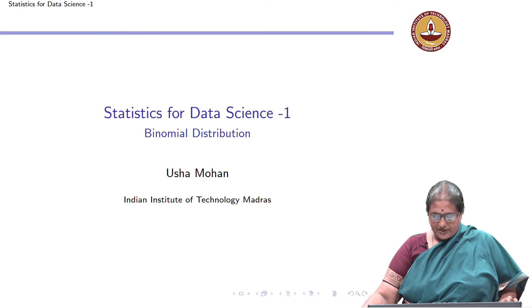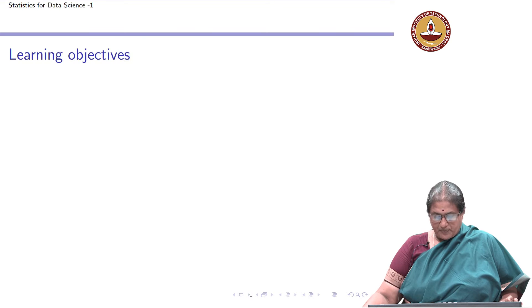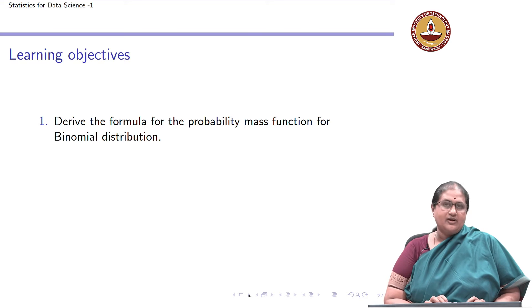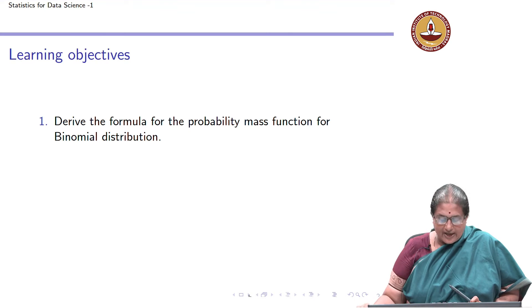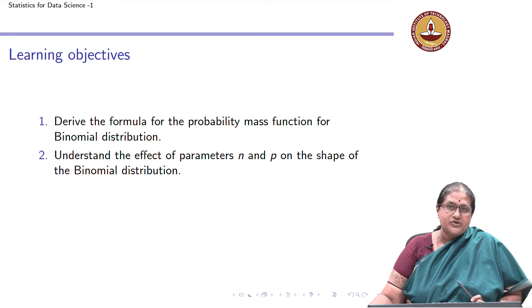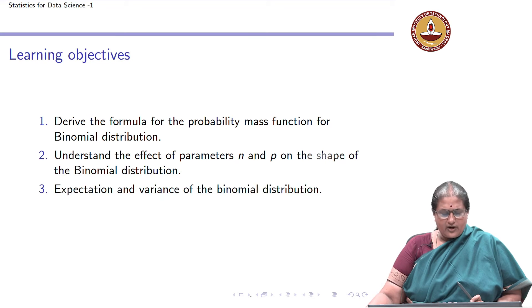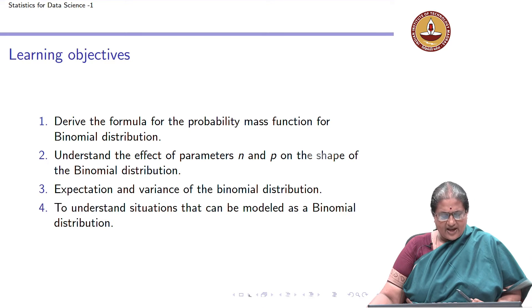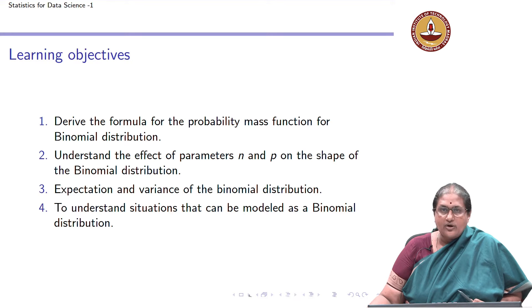The learning objectives for this week are: first, we will derive the probability mass function for a binomial distribution and how the binomial distribution naturally arises. Then we will look at understanding the effect of the parameters of the binomial distribution on the shape of the distribution. We will also look at the expectation and variance, how to answer applications based on them, and finally understand situations that can be modeled as a binomial distribution.